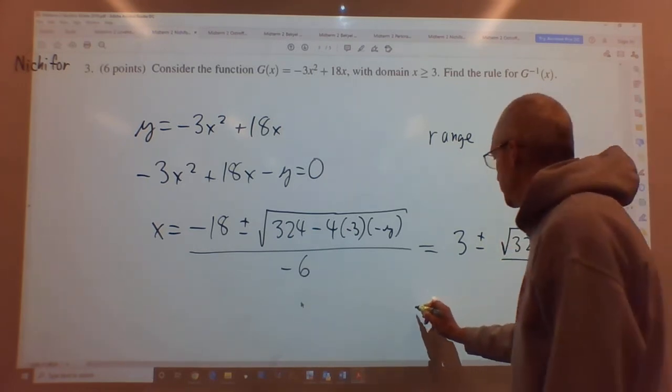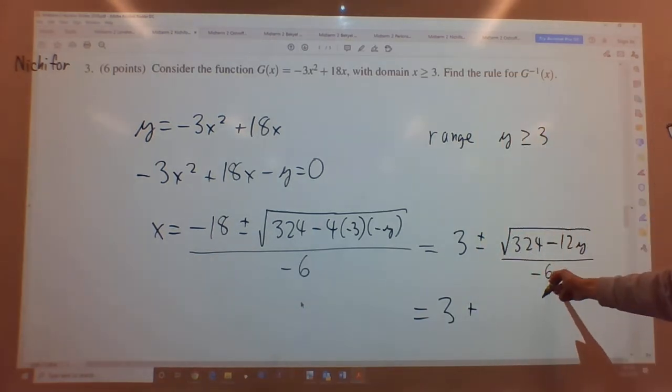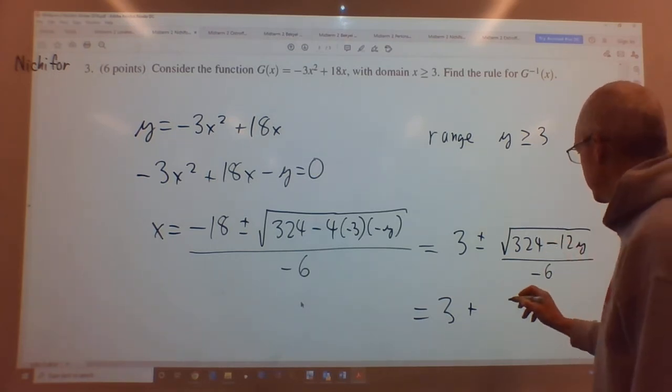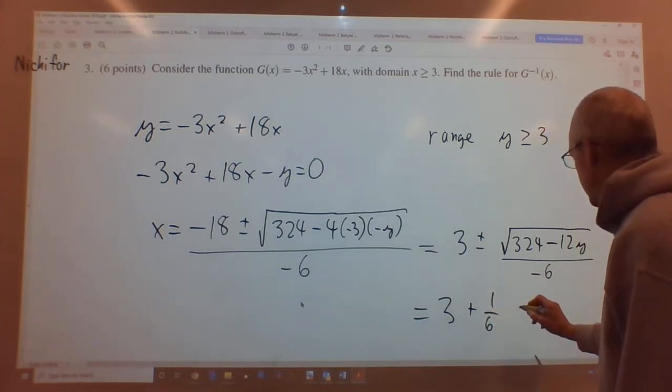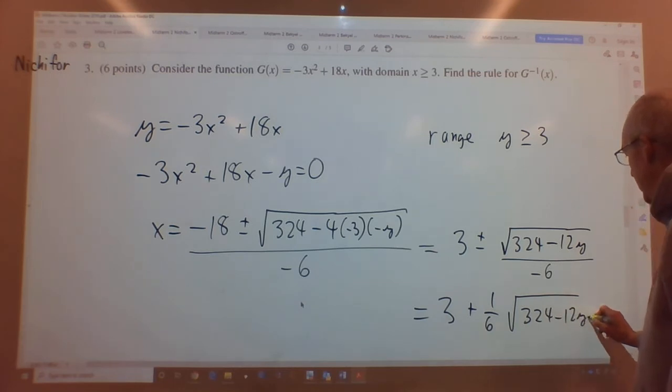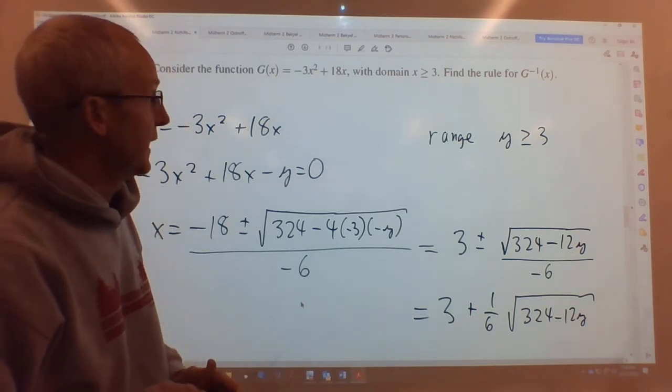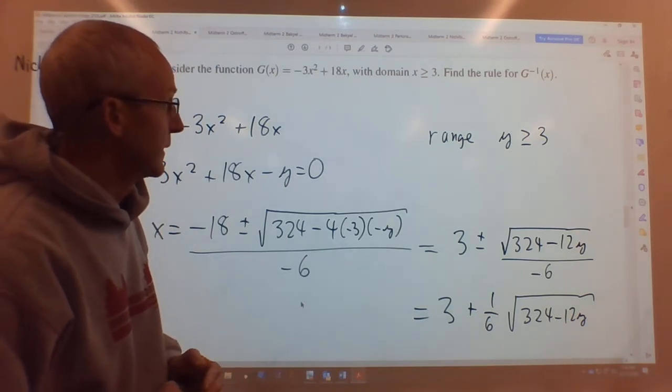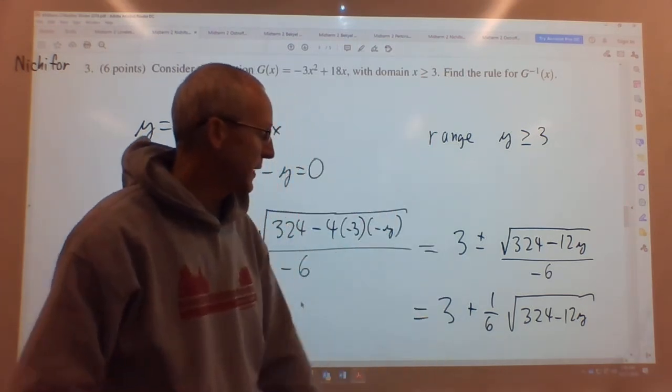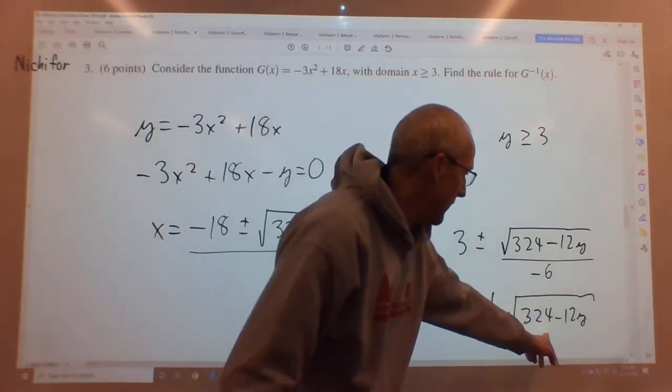So we choose that. So it'll be 3 plus the square root. And we could probably do something fancy with the 6 inside there, make it a 36 and put it inside, but you don't really need to do that. So I'm just going to say 1 over 6 square root of 324 minus 12y. And again, now we know this is always going to be greater than or equal to 3, because the domain of our original function is the range of our function. This has to be bigger than 3 or equal to 3. So that'll be equal to 3 when y makes out 0.